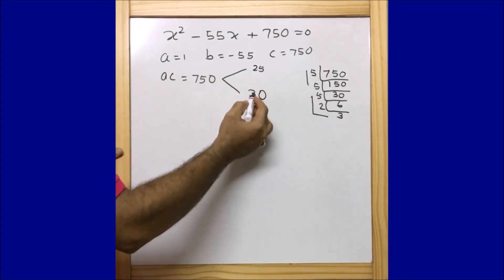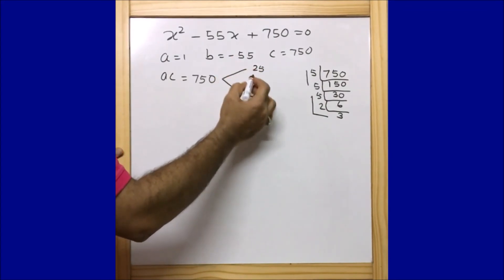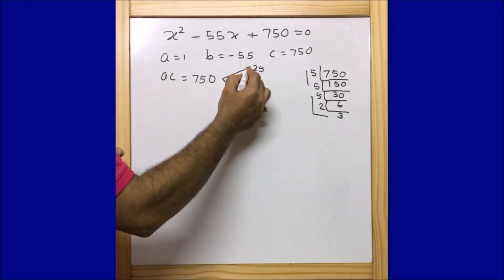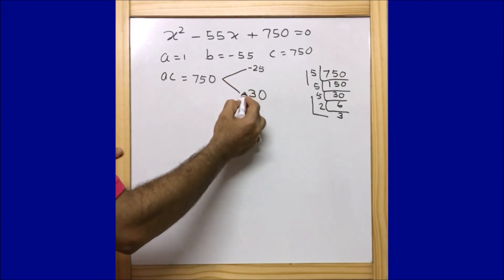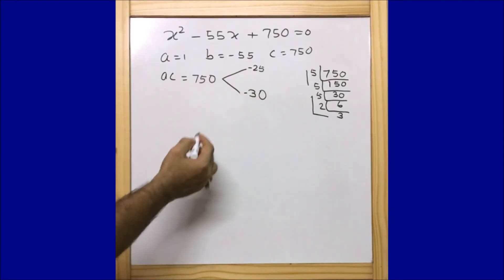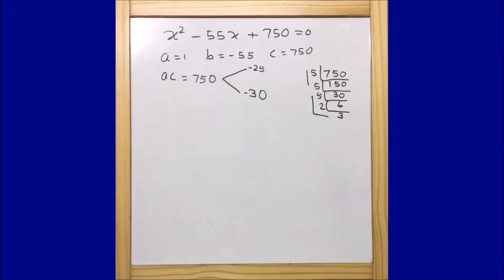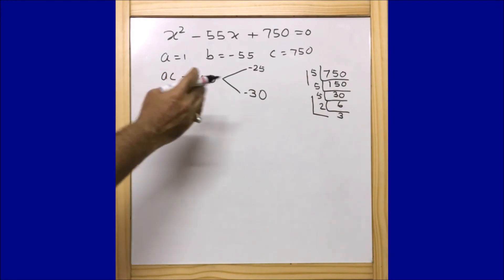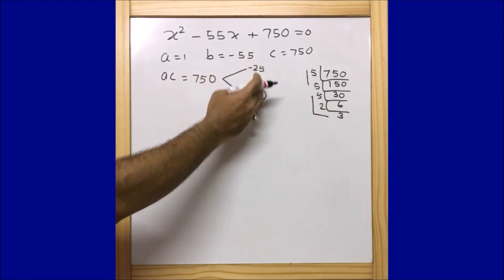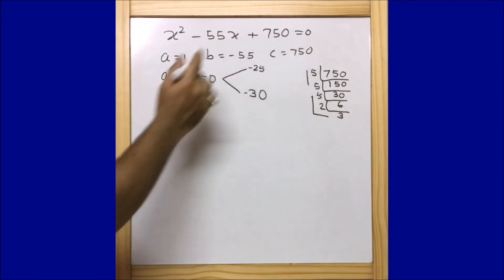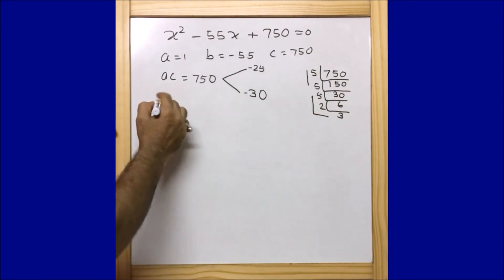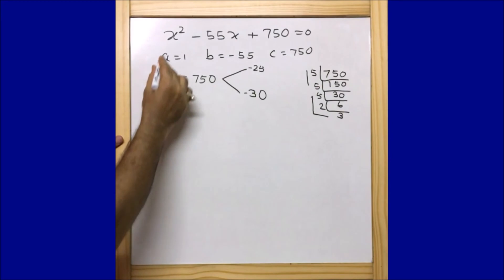We need two numbers that add to minus 55 and multiply to 750. Taking minus 25 and minus 30: adding them gives minus 55, and multiplying them gives positive 750. So our two numbers are minus 25 and minus 30.